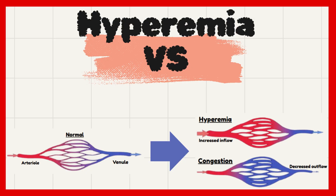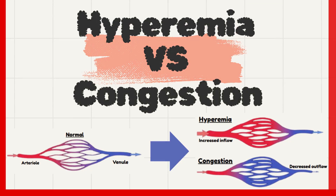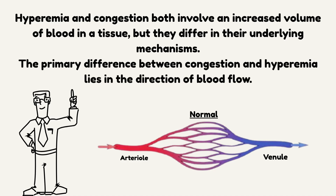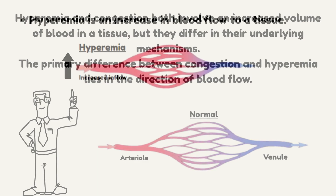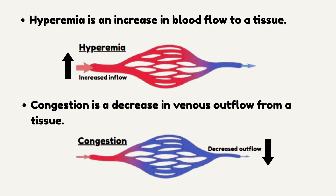Hyperemia vs. Congestion. Hyperemia and congestion both involve an increased volume of blood in a tissue, but they differ in their underlying mechanisms. The primary difference between congestion and hyperemia lies in the direction of blood flow. Hyperemia is an increase in blood flow to a tissue, while congestion is a decrease in venous outflow from a tissue.